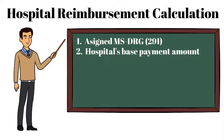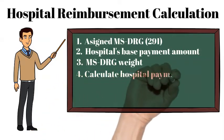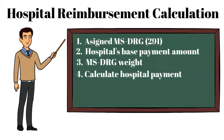Step 3 is determining the MSDRG weight. Each MSDRG is assigned a relative weight based on the average amount of resources it takes to care for a patient assigned to that DRG. For DRG 291, the relative weight equals 1.2683. Step 4, the last step, is calculating the hospital payment amount by multiplying the hospital's base rate by the DRG weight: $6,450 times 1.2683, which equals $8,180.54.